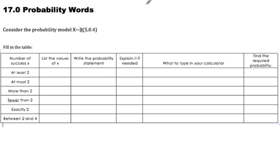Okay, so this podcast is all going to be about using the words in probability. We're going to consider this probability model: X is a random variable that follows a B, which stands for binomial distribution, with n being 5 and the probability is 0.4. So if there are n possibilities, that means there are 5 things we're choosing from.